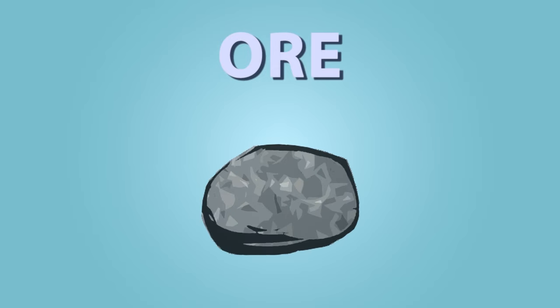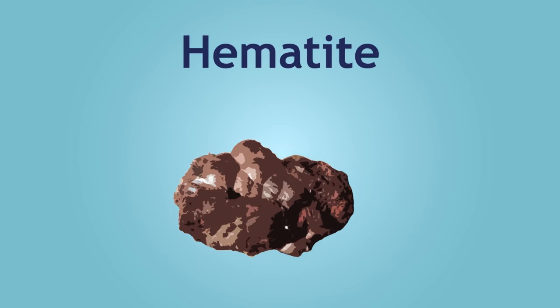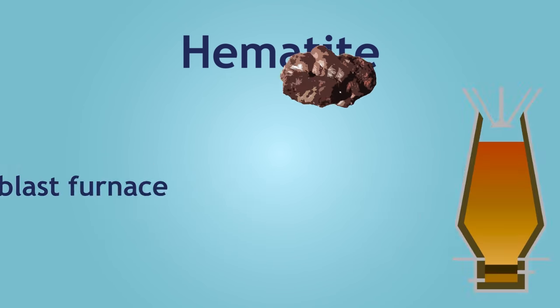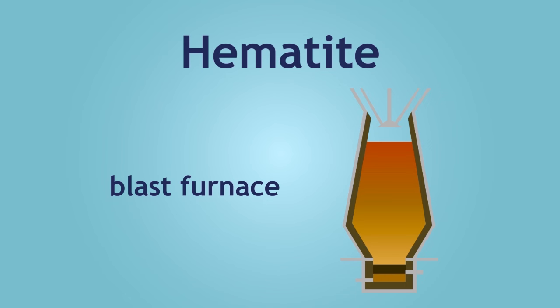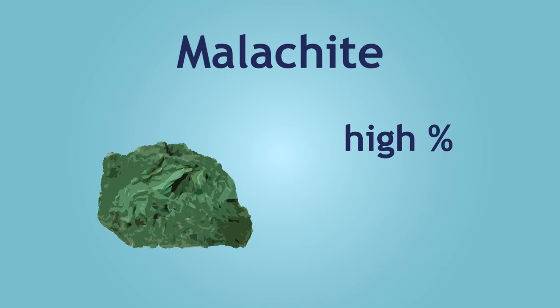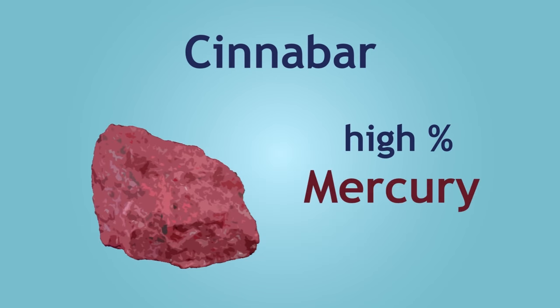An ore is simply a rock containing a high percentage of a certain mineral. For example, hematite contains a high percentage of iron, and the extraction of iron from hematite is done in a blast furnace. Malachite contains a high percentage of copper. Cinnabar contains a high percentage of mercury.